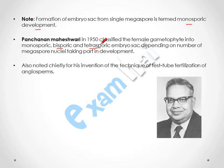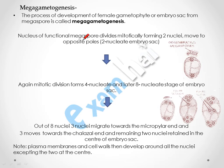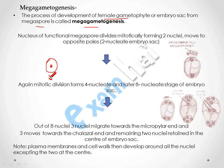Panchana and Maheshwari in 1950 classified the female gametophyte into monosporic, bisporic, and tetrasporic embryo sac depending on the number of megaspore nuclei taking part in development. The development of the female gametophyte from the megaspore is called megagametogenesis. The one functional megaspore now divides mitotically — it was converted from the diploid megaspore mother cell into a haploid megaspore by the process of meiosis.